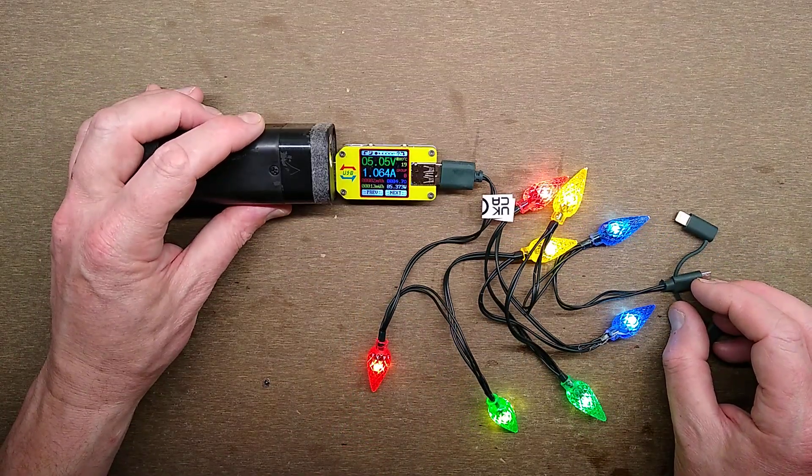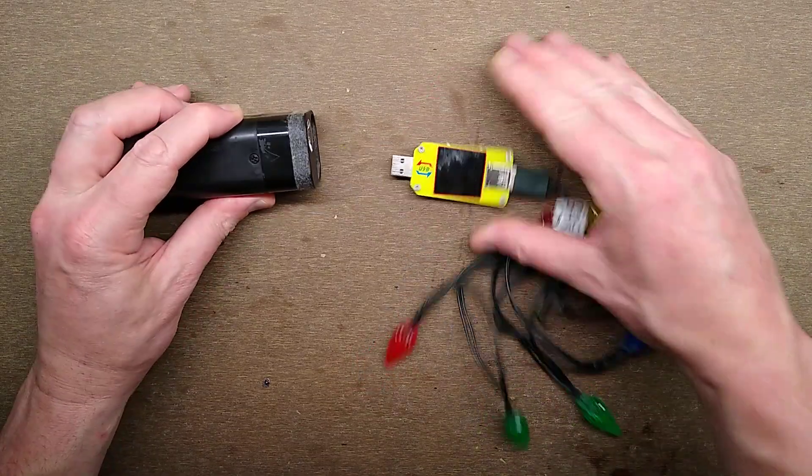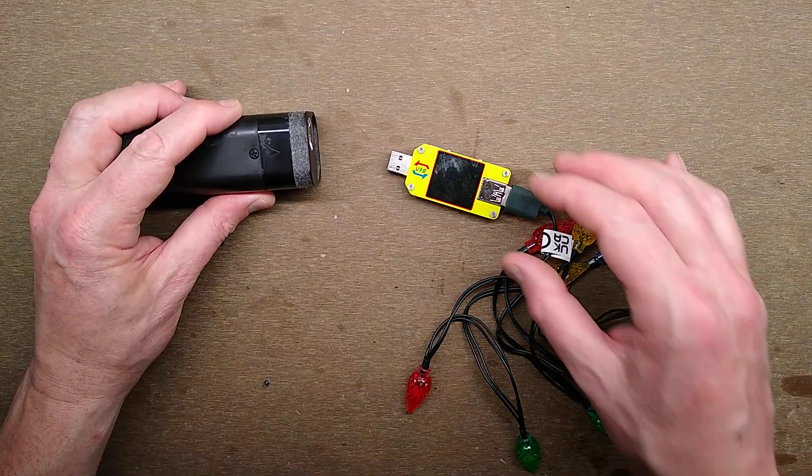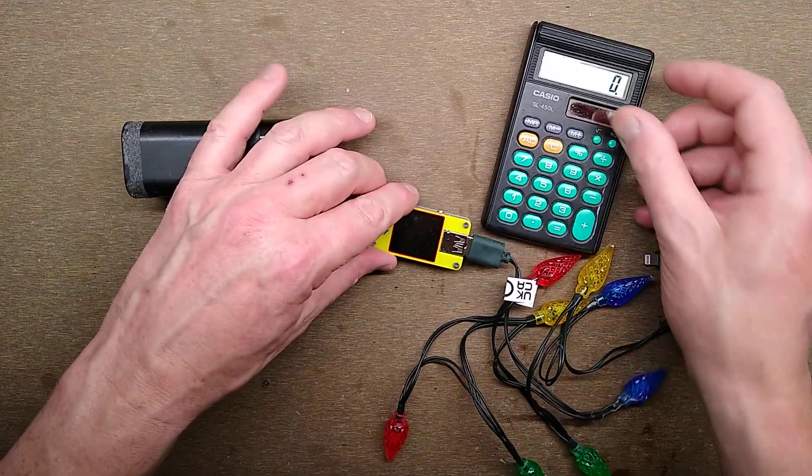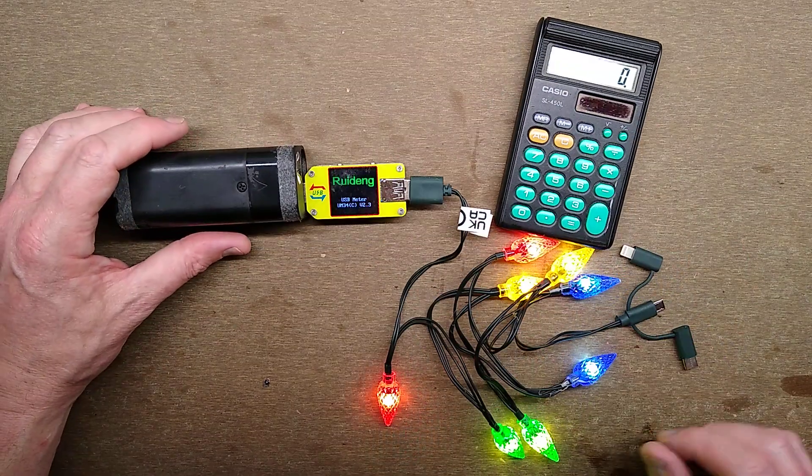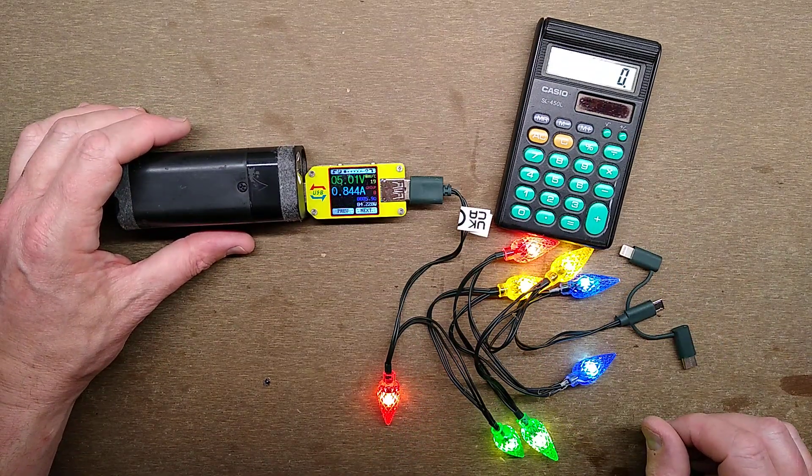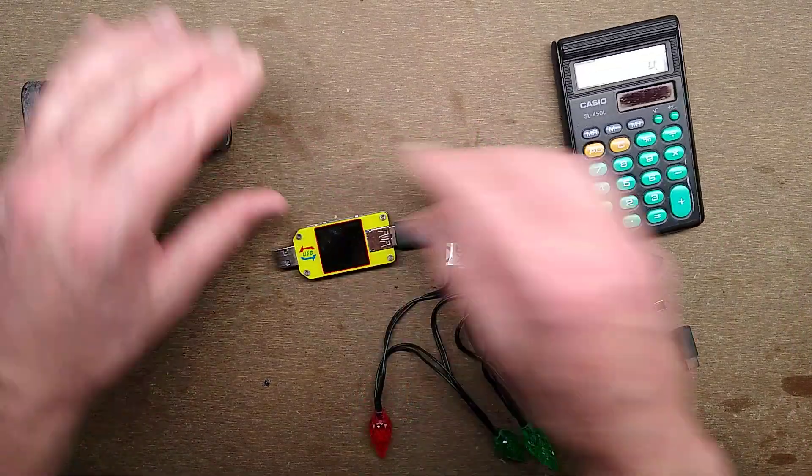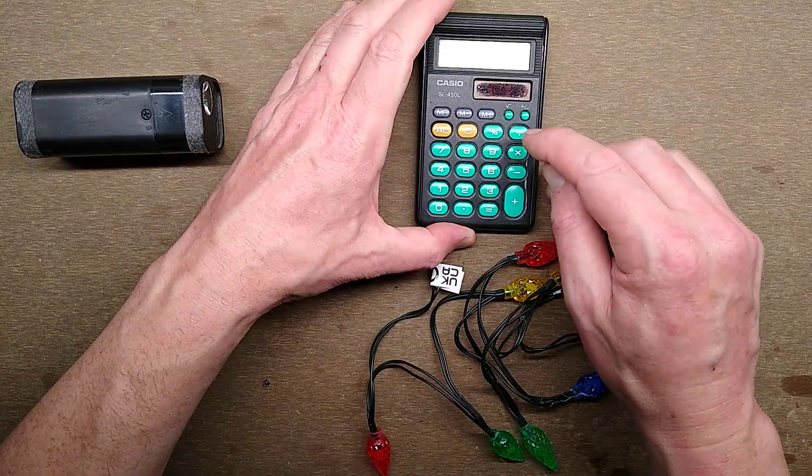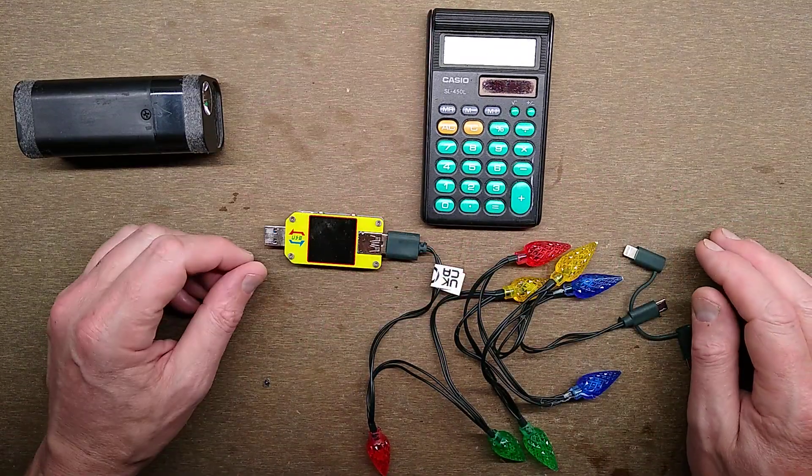Oh, it's drawing over an amp. That's not right. Let me do that again. The current is going down. Let's say it was drawing an amp. 1,000 milliamps divided by 8 LEDs equals 125 milliamps per LED.